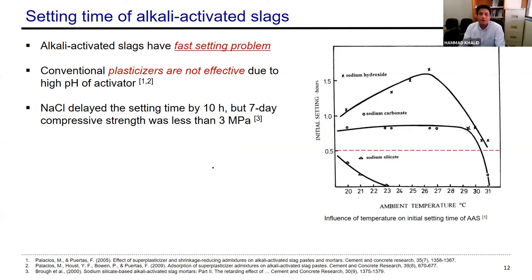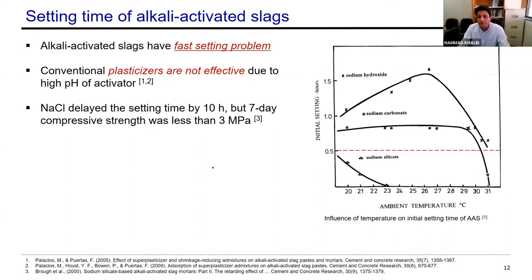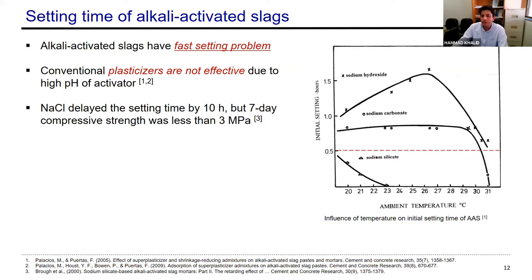Now that I have explained what the activators are and what type of materials and local options we have, I would like to talk about our personal experiences and studies by our research team. If we talk about slag, as I mentioned earlier, slag is a high calcium precursor, and high calcium precursors — specifically slag — have high rapid setting issues. This chart shows that if we use different activators at different ambient temperatures, most of the slags have their initial setting time less than the minimum acceptable limit of one hour.